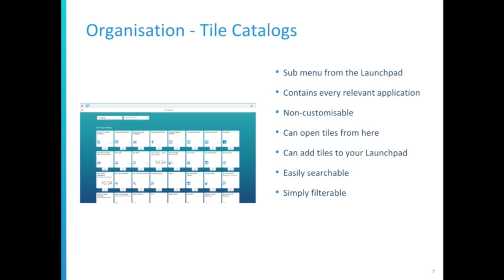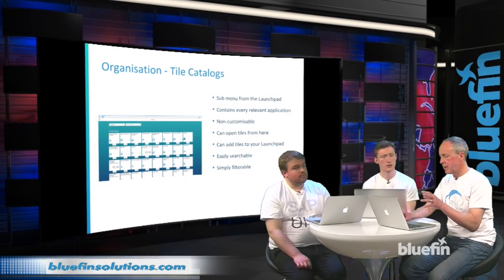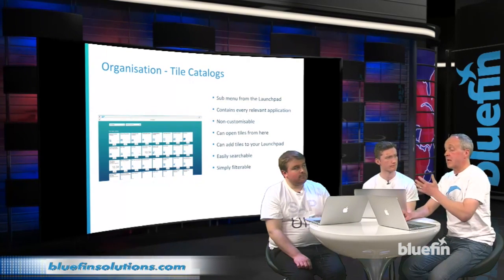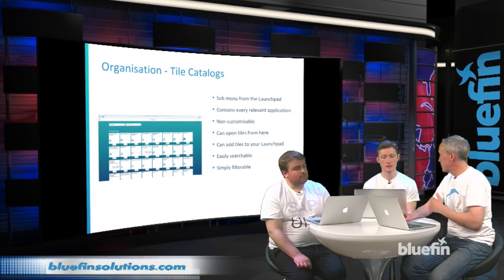Behind the home page, you've got the tile catalogue. This screen isn't customizable and it contains every single application that you or your user has access to. That might include a lot of stuff you don't actually necessarily need. In here you can look at what you want and simply add it with a one-button click to your home screen, allowing you to build up a nice streamlined home screen. It's also fair to say that it's not just applications — you can have a catalogue of KPIs, for example.